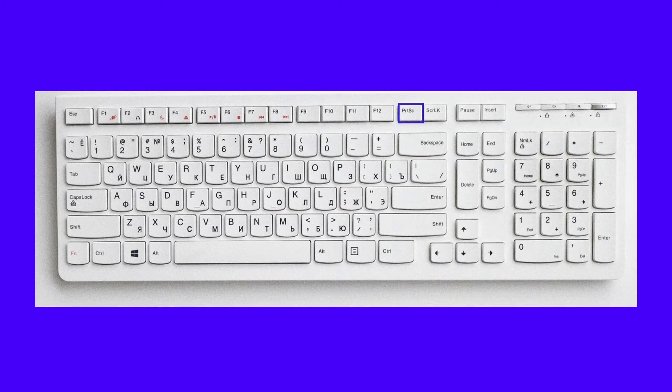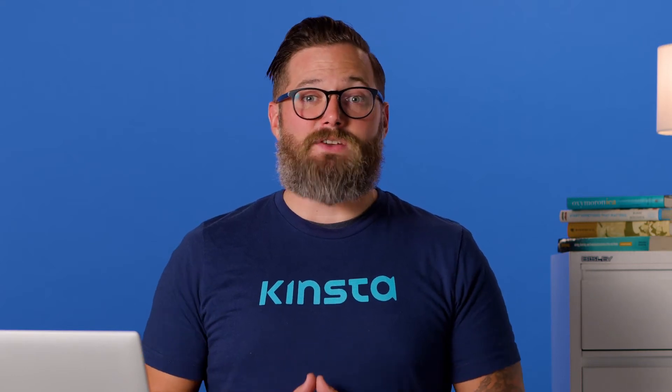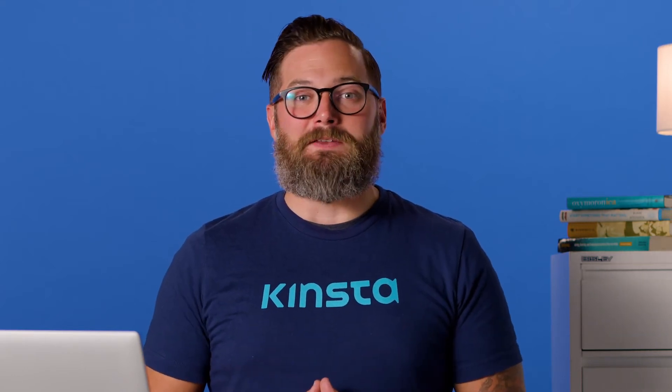On some newer keyboards, especially on laptops, you need to hold down the function key while pressing print screen to capture the screen. When you use this method, the OS copies the entire screen automatically to the clipboard. From there, you can directly paste it into an email, social media platform, or messaging app. You can even start editing it in an image editing software like Photoshop or even MS Paint.